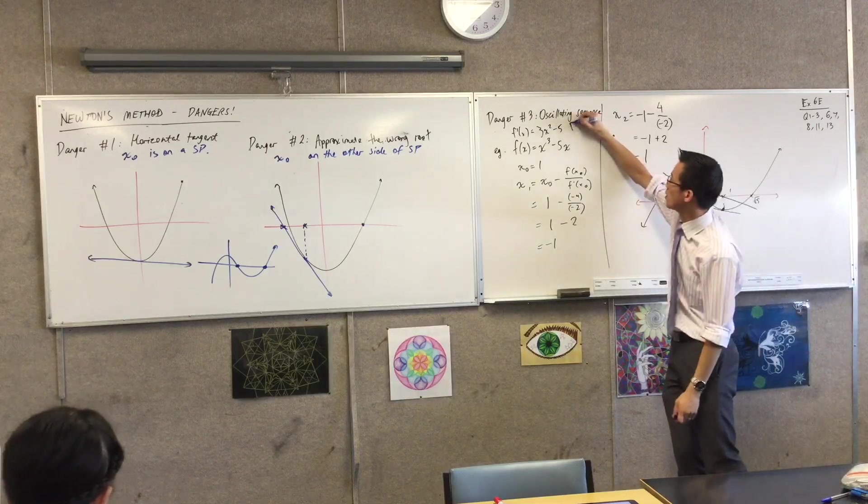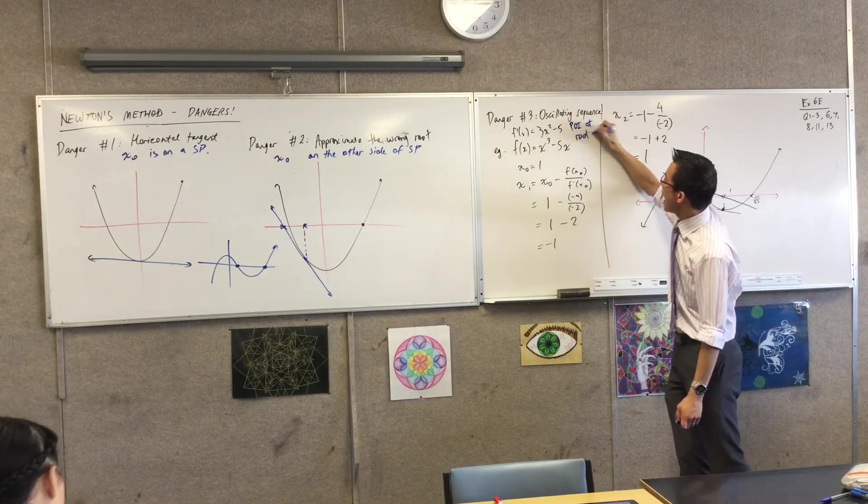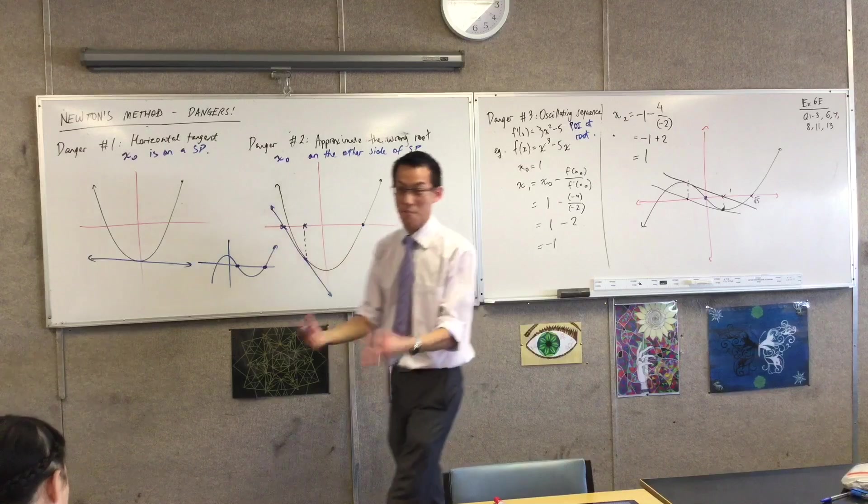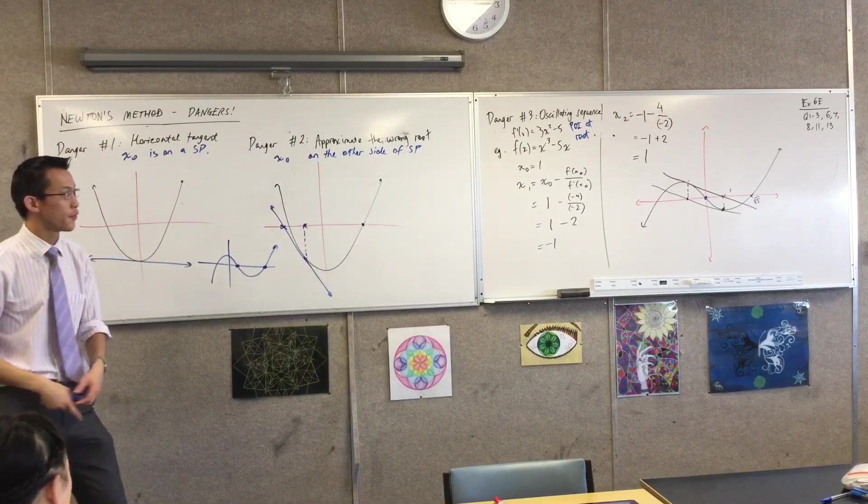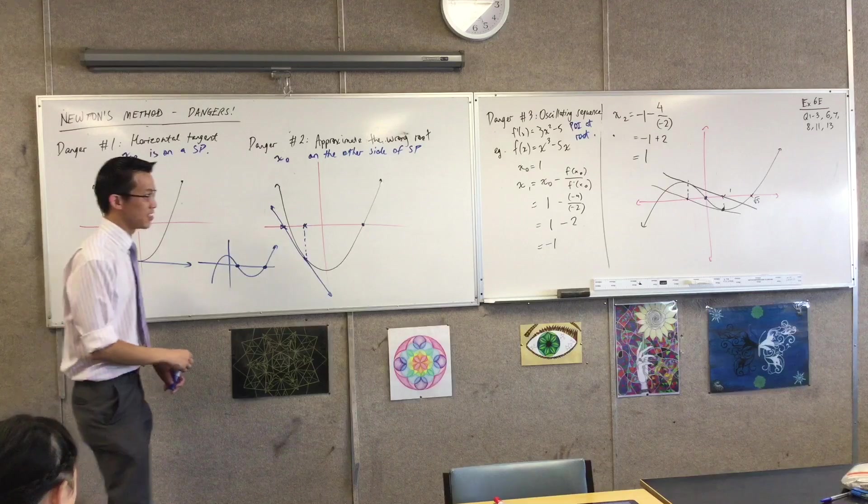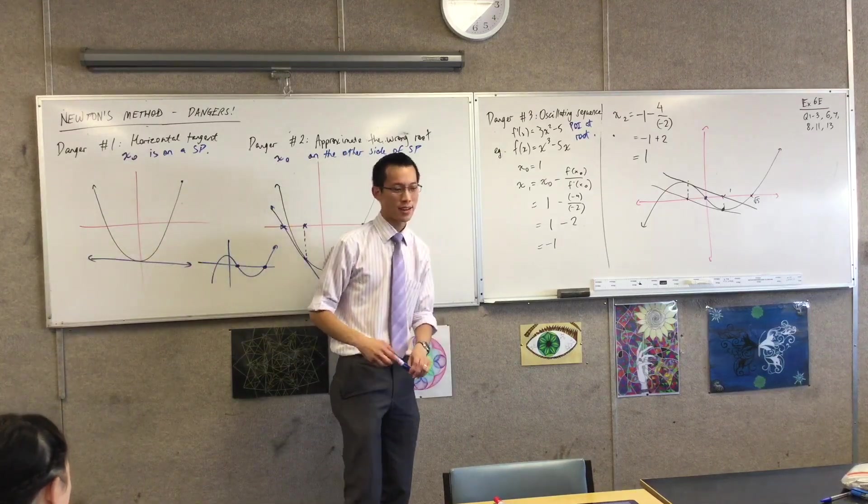So really what happened was, there was a point of inflection at the root we were trying to approximate. That was the problem. And that kind of screwed us up. You could also refer to the fact that it's an odd function. That's an issue too. It's really got the gradient and the concavity.